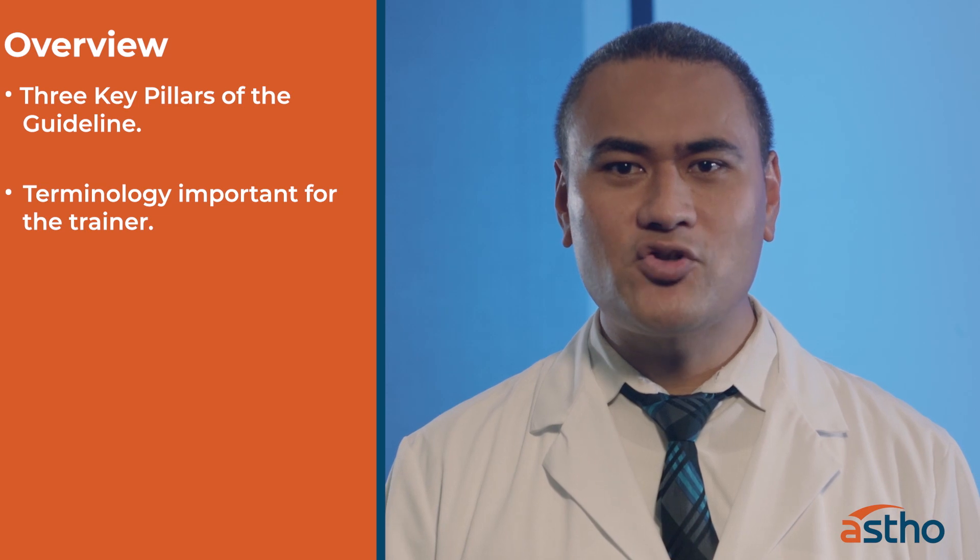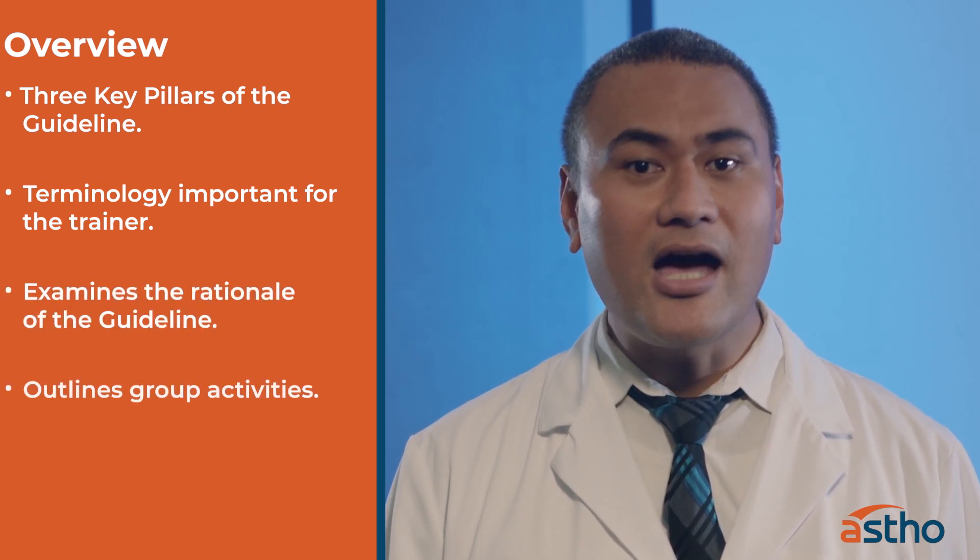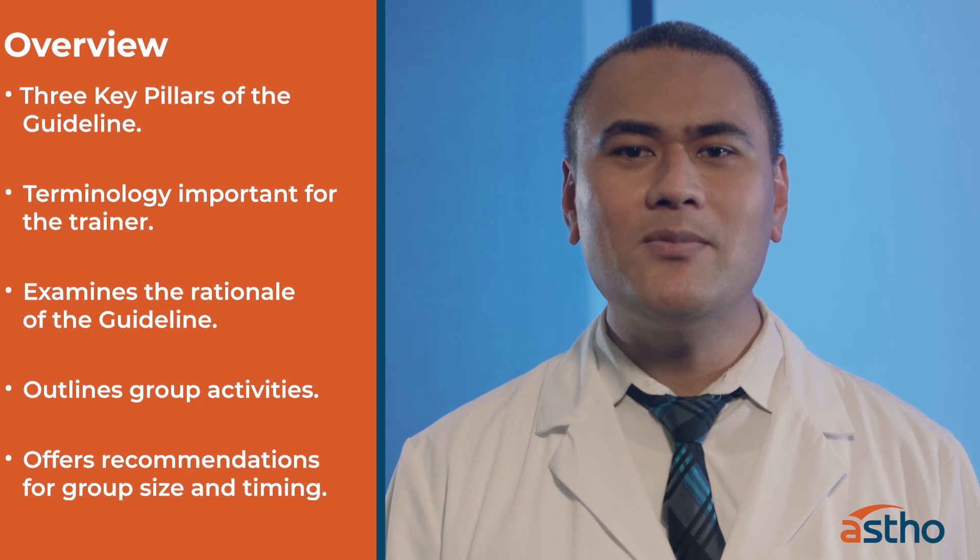Let's begin by reviewing the last three supplemental Train-the-Trainer videos. The first Train-the-Trainer video provides an overview of the training with emphasis on the curriculum's first four pages of FSM's Opioid Prevention and Response Training curriculum: Prescribing Opioids for Chronic Pain. It covers the three key pillars of the guideline, reviews terminology important for the trainer, examines the rationale of the guidelines, outlines group activities, and offers recommendations for group size and timing. It includes learning and practice objectives, materials, curriculum handouts, and resources, and offers instructions about where and how to access materials.